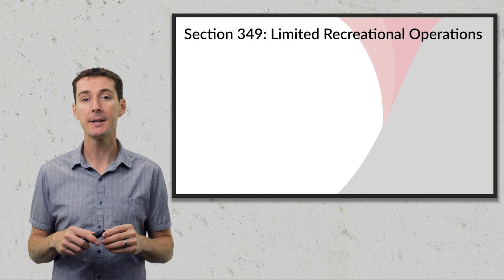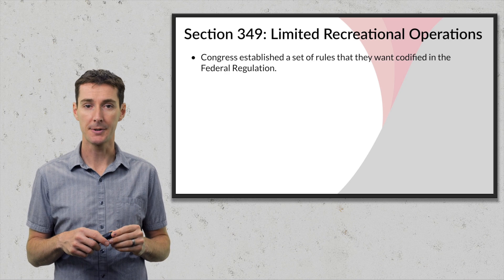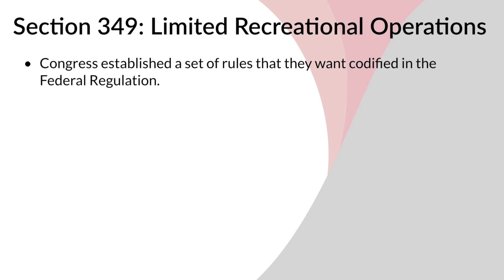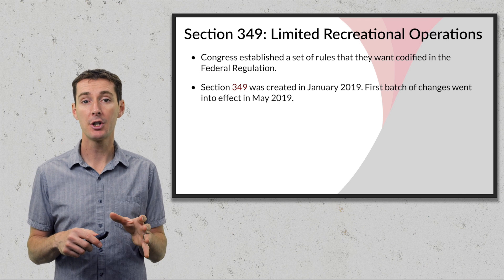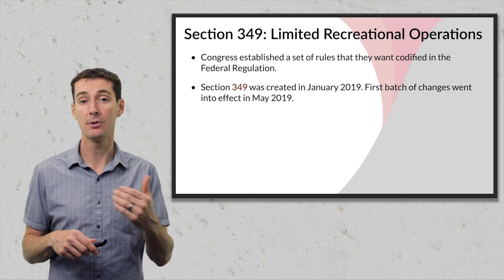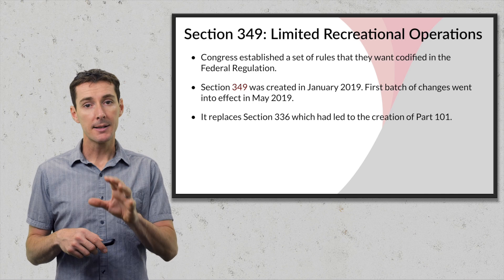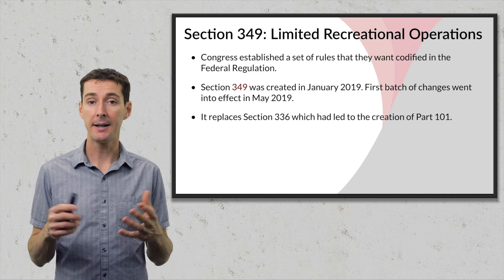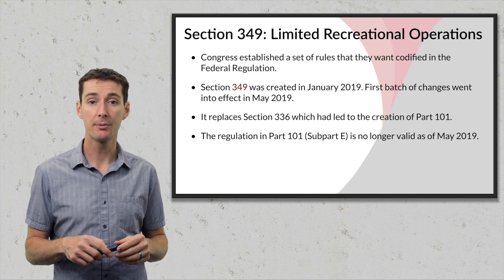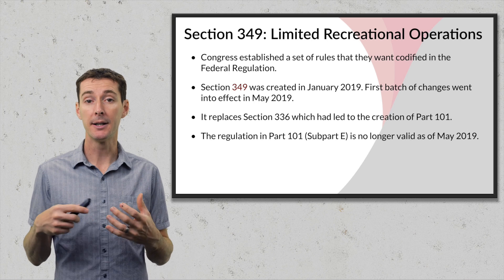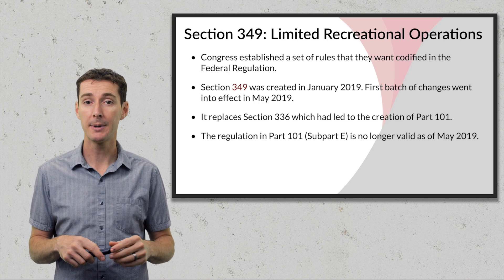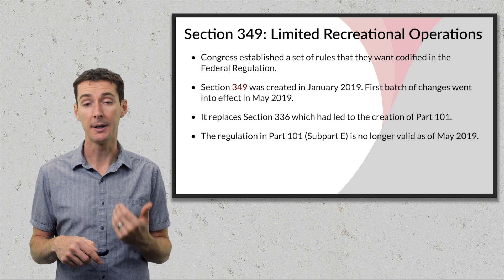Let's talk about Section 349, titled 'Limited Recreational Operations.' Congress established a set of rules to be codified in federal regulation. Section 349 was created in January 2019, giving the FAA one year to codify everything. The first batch of changes happened in May 2019. Section 349 is replacing Section 336, which led to the creation of Part 101. Both Section 336 and Part 101 are no longer valid as of May 2019.